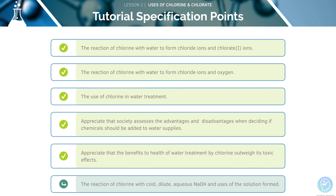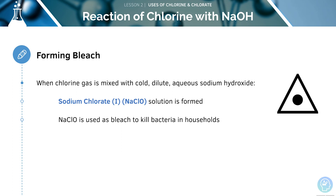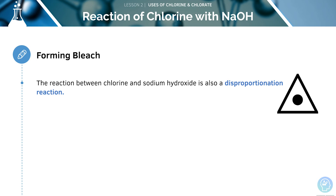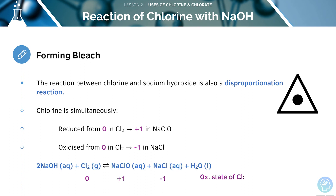Finally, we will look at the reaction of chlorine with sodium hydroxide. When chlorine gas is mixed with cold, dilute, aqueous sodium hydroxide, sodium chlorate solution is formed. This is more commonly known as bleach, which can be used to kill bacteria in kitchens and bathrooms at home. We can also use it in water treatment or to bleach paper and textiles. Chlorine will also undergo a disproportionation reaction, simultaneously reducing from zero in Cl₂ to plus one in NaClO. You can see the overall equation here, where the oxidation state of chlorine is still zero.